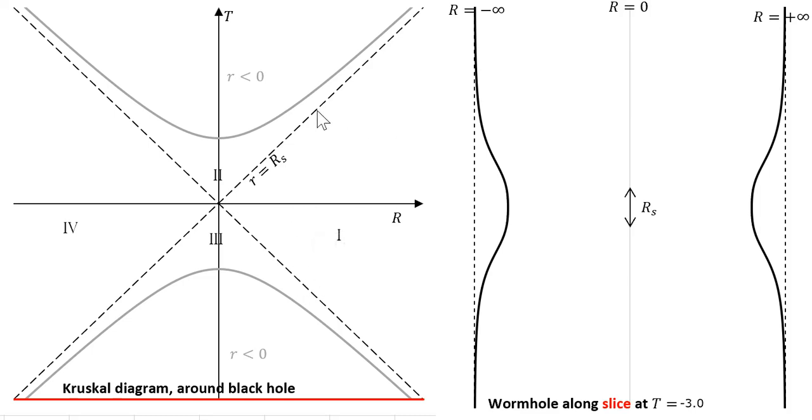Over here we've got region 1, which is outside the black hole, and region 2, which is a smaller piece below that grey line, which is inside the event horizon of the black hole.